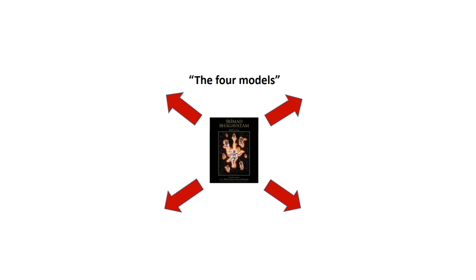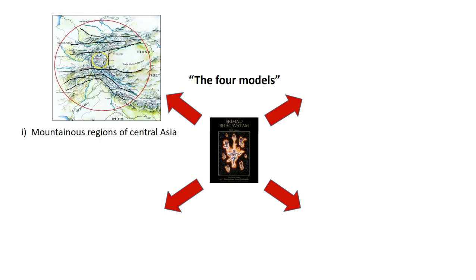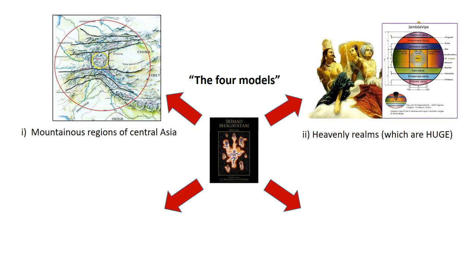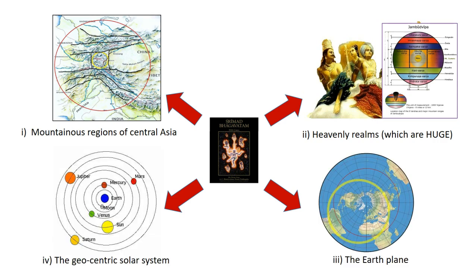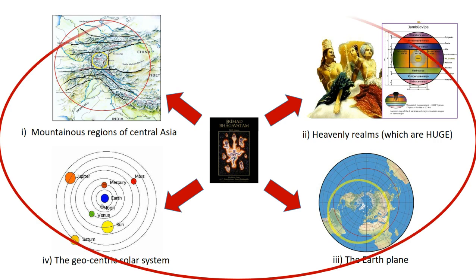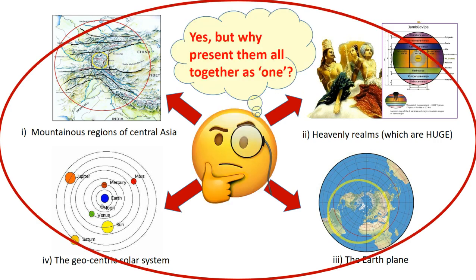Sadaputadas divided the Fifth Canto into four models: the mountainous regions of Central Asia, the heavenly realms — which are incidentally huge — the earth plane, and the geocentric solar system. They're all presented in the Bhagavatam as one entity. But why present them all together as one? Because that could be confusing. Let's look into that.